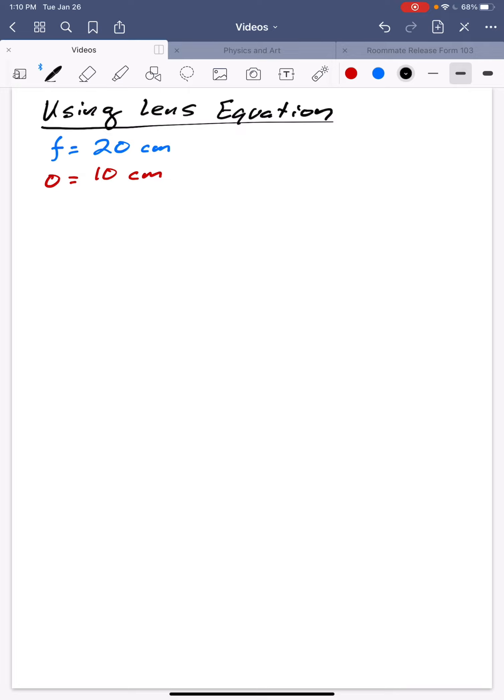So if I have a problem where I have a focal length of 20 centimeters and an object distance of 10 centimeters and it wants me to find the image distance, I know I'm going to be using the thin lens equation.